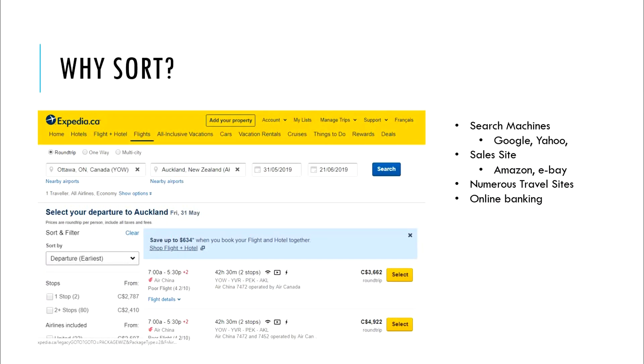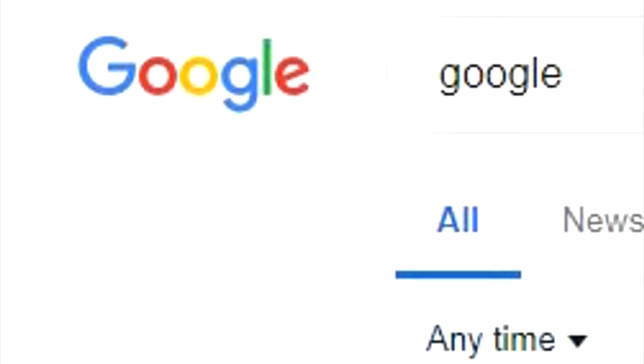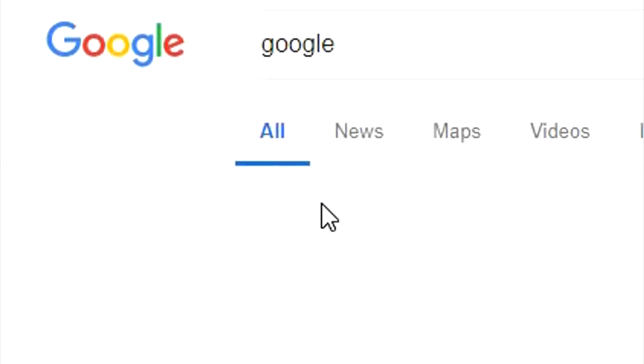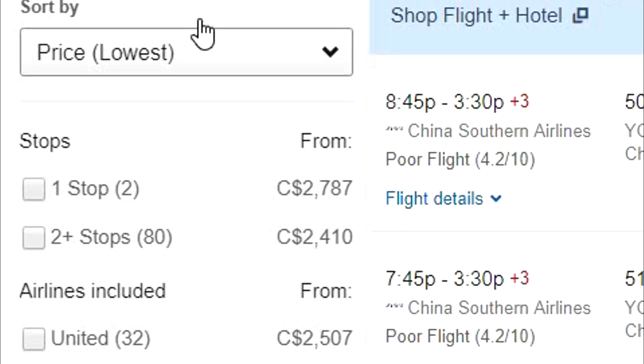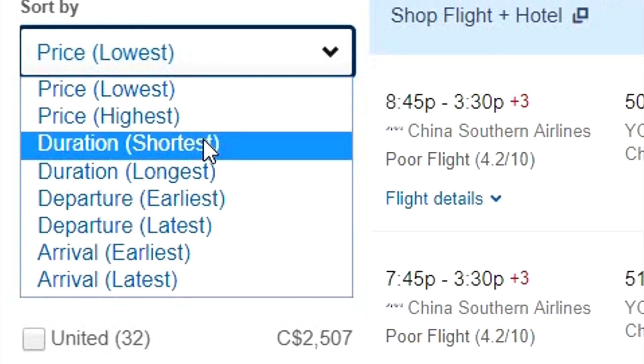Today, a lot of modern technology relies on using sorting. There are various search engines like Google and Yahoo, sales sites like Amazon, eBay, and numerous travel sites, online banking sites, social networking sites, etc.